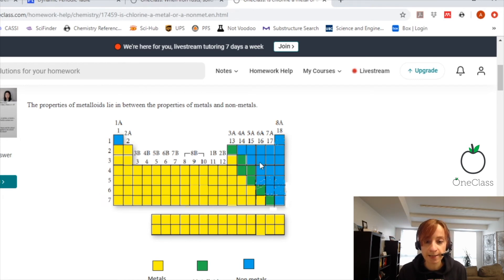So as the chlorine atom is in this square here, it is a non-metal. If it were pretty well anywhere else in the periodic table, it would most likely be a metal.